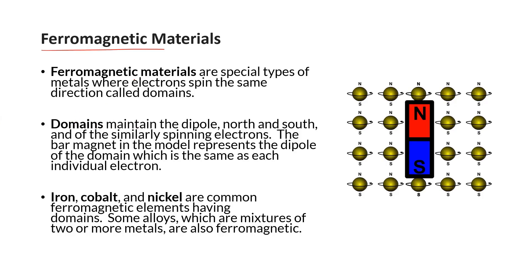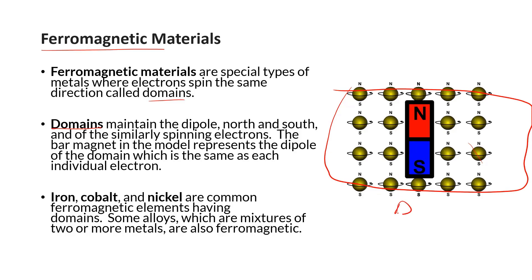Ferromagnetic materials are materials that can have things called domains. Domains are areas of a material where all the electrons are spinning in the same direction. If they're all spinning together in the same direction, that could be considered a domain. This material would be ferromagnetic because it can have domains. Some common ferromagnetic materials are iron, cobalt, and nickel.